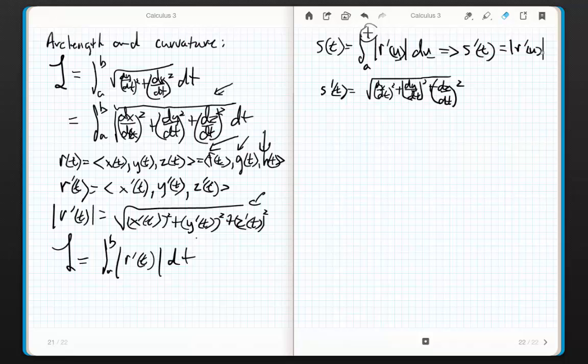So s primed of t is also equal to the square root of dx over dt squared plus dy, and this is plus dz over dt squared. Remember, s primed of t has to be r primed of t, which gives me this guy. Sorry about that. Got a little lazy there.